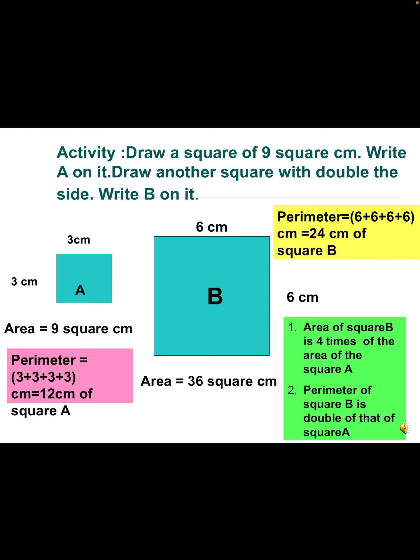Another activity: Draw a square of 9 square cm and label it A. Draw another square with double the side and label it B. Find the area and perimeter of each square and determine the conclusion from these hypotheses.